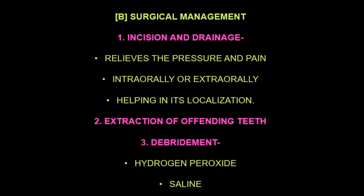The second step is to extract the offending teeth; sometimes drainage is also achieved by this extraction. The third step is debridement. Following incision and drainage, thorough debridement of the affected area should be carried out. The area may be irrigated with hydrogen peroxide and normal saline. Any foreign body, necrotic tissue, or small sequestrum should also be removed at this stage.